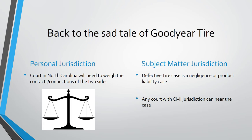Back to the Goodyear Tire case — it's a sad story; those young men lost their lives and their parents believe it was due to a defective tire. For personal jurisdiction, the North Carolina court needs to weigh contacts and connections between the two sides. The foreign subsidiaries of Goodyear do not believe North Carolina courts have power over them. For subject matter jurisdiction, it's straightforward — it's a negligence or product liability case, and any court with civil jurisdiction can hear the case.